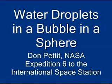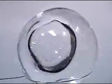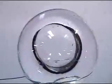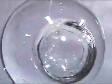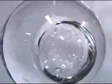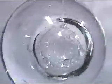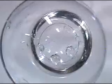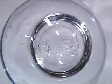Water droplets in a bubble in a sphere. Here we have a sphere of water 75 millimeters in diameter with an air bubble inside about 35 millimeters in diameter, and we inject water droplets anywhere from one to eight millimeters in diameter into the bubble and look at the resulting collision dynamics where they collide with each other and the walls.